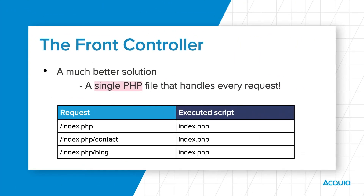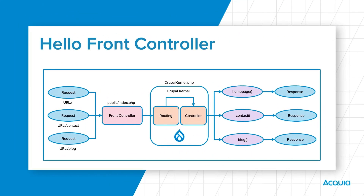A much better solution is to use a front controller — a single PHP file that handles every request coming into your application. A request to slash index.php would execute index.php, but a request to slash index.php slash contact would still execute index.php, and so on. Requested paths are treated like arguments, and those arguments are passed along to help determine what needs to be done. Every request is handled in exactly the same way, and the routing of different URLs to different pages is done internally.